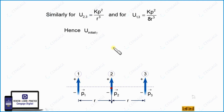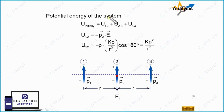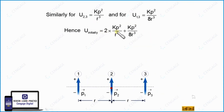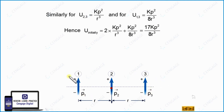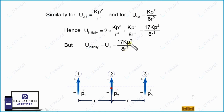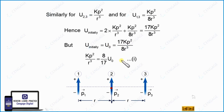Substituting all values, the total initial potential energy equals 17KP²/8R³. We are given that this equals U0, so U0 = 17KP²/8R³. From this we can find KP²/R³ = 8U0/17. Let this be equation number 1.